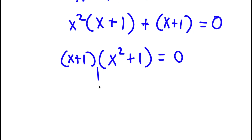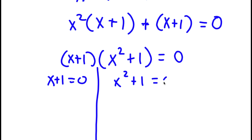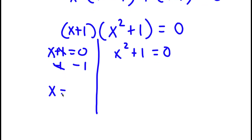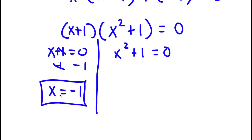From here I get two equations: x + 1 = 0 and x² + 1 = 0. For x + 1 = 0, I simply subtract 1 on both sides — these two cancel out — and I'm left with x = -1. So this is one solution of x.